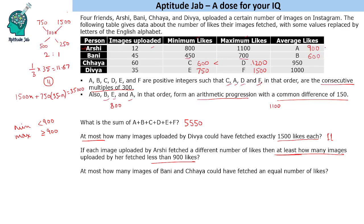Next question: If each image uploaded by Arshi fetched a different number of likes, then at least how many images uploaded by her fetched less than 900 likes? Basically, we have to minimize less than 900, so we will maximize greater than or equal to 900. We know one image is 800, one image is 1100. To minimize this, we need to keep the number of images in most cases as close to 900 as possible.